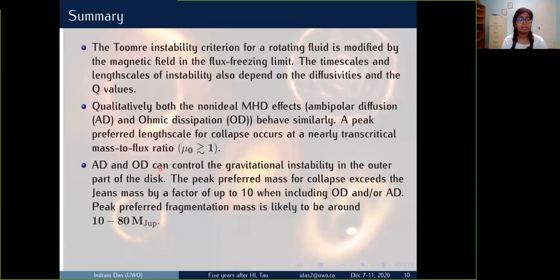So here I'm going to sum up my results. The Toomre instability criteria for a rotating fluid is modified by the magnetic field in the flux-freezing limit. The time scale and length scales are also depending on the diffusivity and the Q values. Qualitatively we see both the non-ideal MHD effects behave similarly and the peak preferred length scale occurs at a nearly transcritical mass to flux ratio. And we see both ambipolar and ohmic can control the gravitational instability in the outer part of the disk. The peak preferred mass exceeds Jeans mass by order of up to 10 and these masses is likely to be around 10 to 80 times of Jupiter mass which might help to the understanding of the clump formation within the protostellar disk in the early embedded phase.